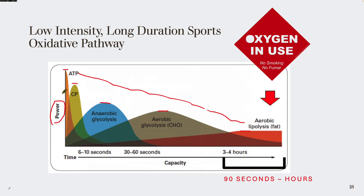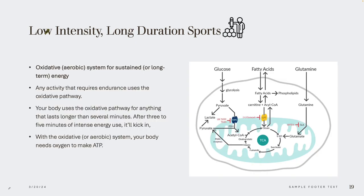We can maintain high intensity for a short amount of time, but we have to take a break. When we move into this aerobic pathway, it's a much lower intensity — but it goes from 90 seconds to multiple hours. This is a low-intensity, long-duration, oxidative or aerobic pathway, and this system is sustained for a long period of time, producing energy continuously.